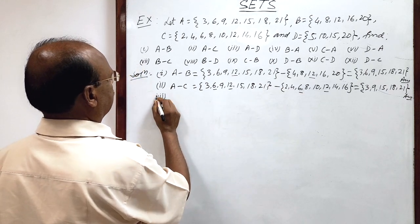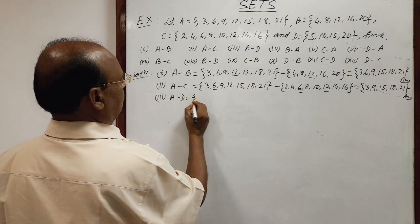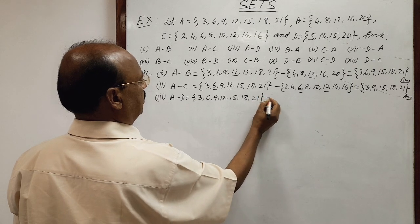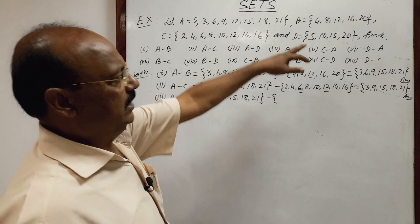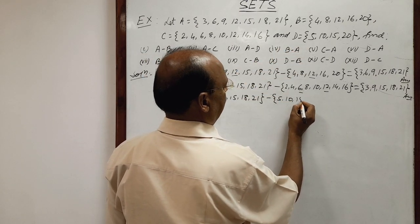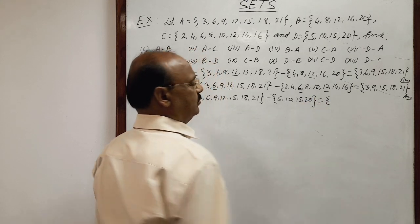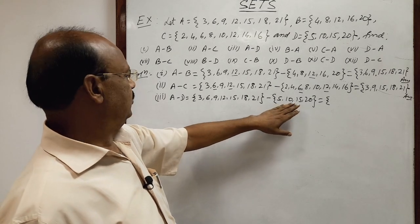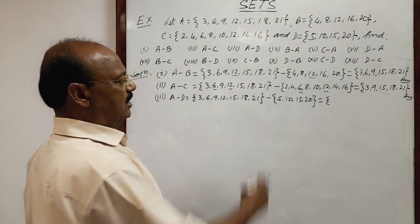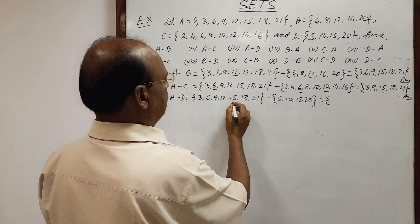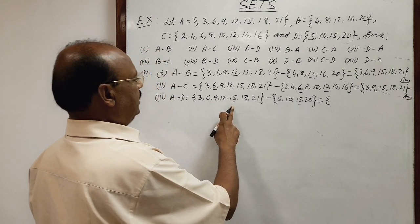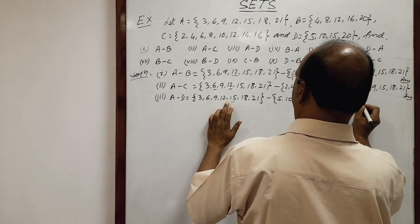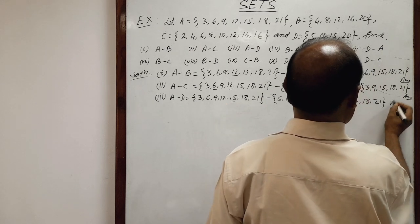Next, A minus D. A is a set having elements 3, 6, 9, 12, 15, 18, and 21, minus set D having elements 5, 10, 15, and 20. We get a set which will consist of only those elements available in A but not in D, because the elements available in D will be removed. You see, 15 is common in both sets, so 15 has to be removed. The remaining elements in the answer are 3, 6, 9, 12, 18, and 21.